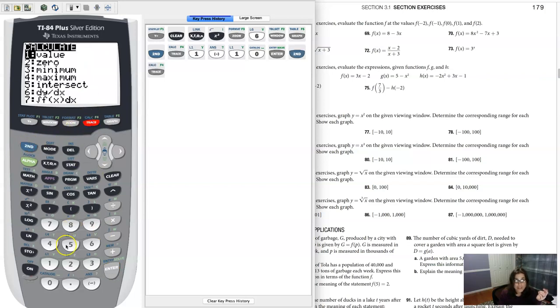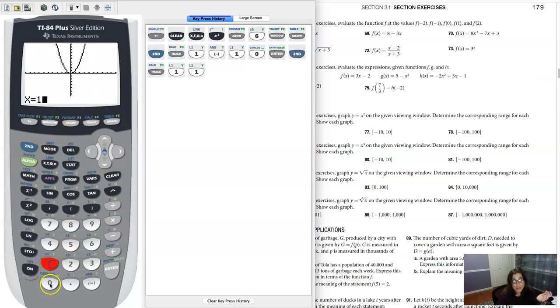And if I plug in the other end of my domain, my given domain, 10, I get again a hundred.